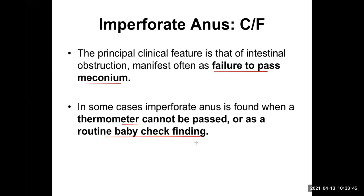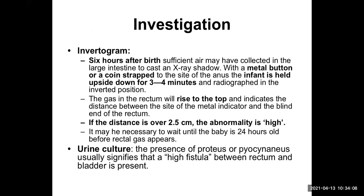In some cases, imperforate anus is found when a thermometer cannot be passed, or during routine baby checkup at the delivery room. Good pediatricians check the baby routinely at delivery and don't even wait for 24 hours. Imperforate anus is also known as anal atresia, and the anal canal is about 4 centimeters long.